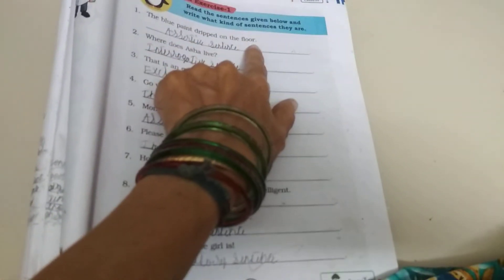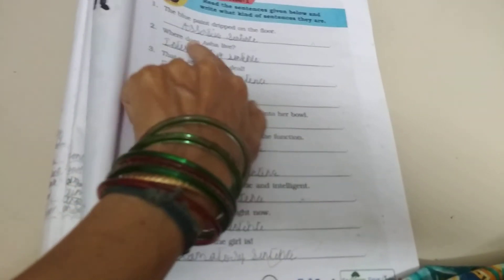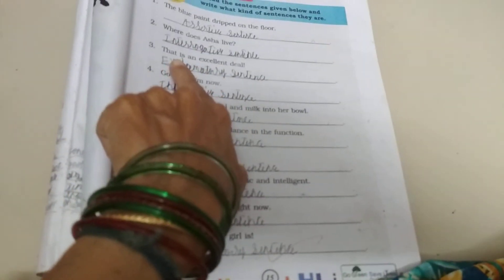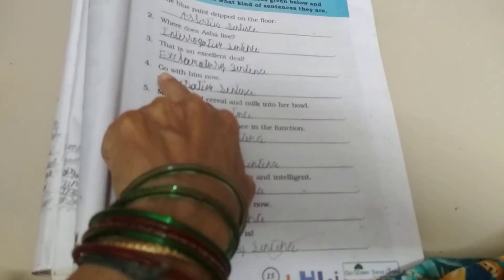The blue paint dropped on the floor. Assertive sentence. Examples of sentences. Where does Asha live? Interrogative sentence. This is an excellent deal. Exclamation sentence. Go with them now. Imperative sentence.